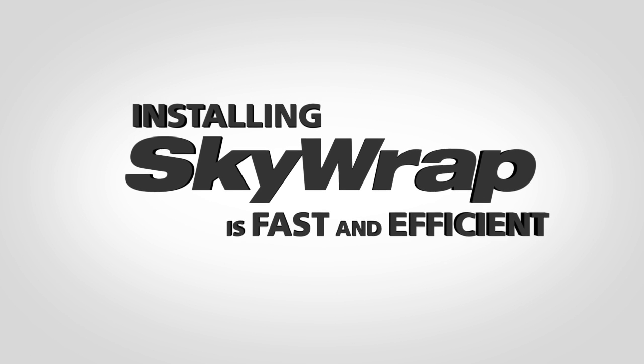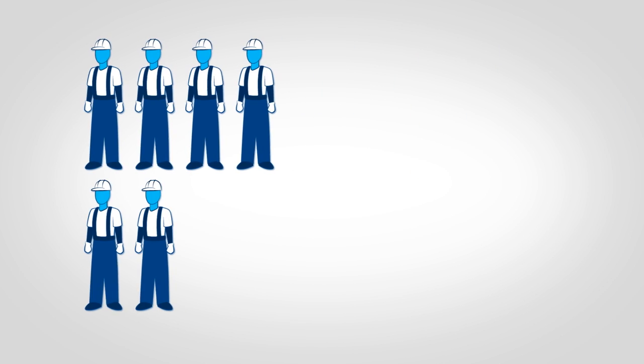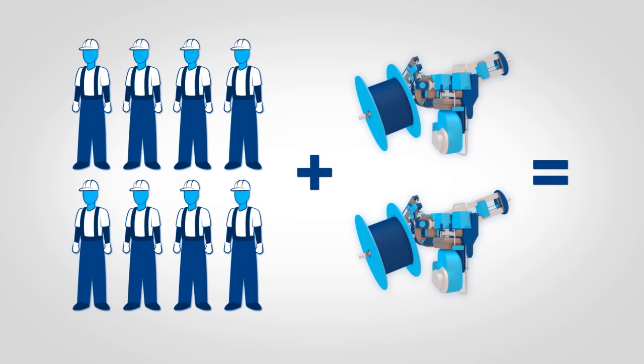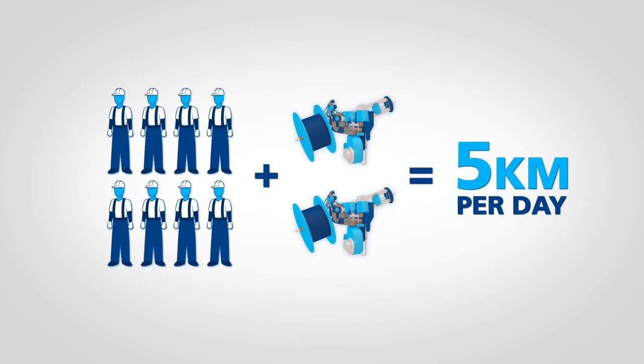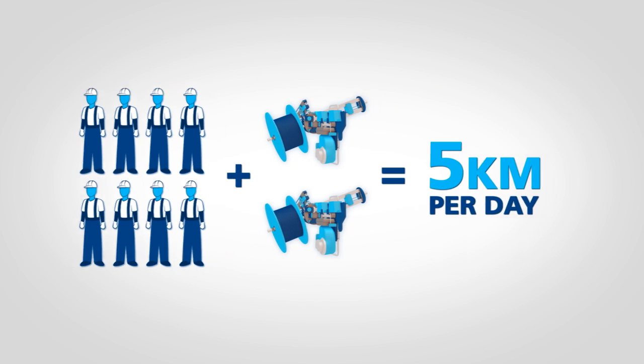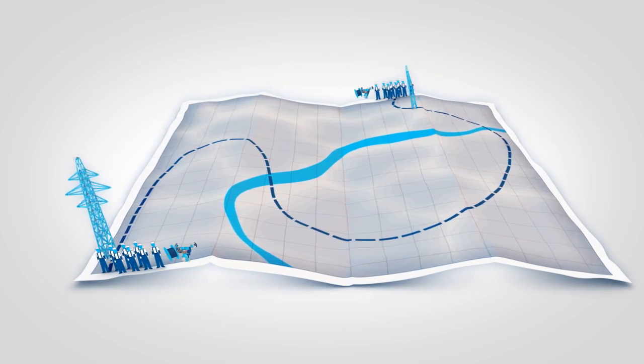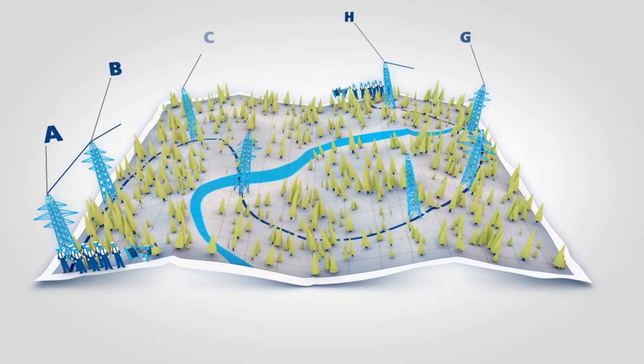Installing Skywrap is fast and efficient. Eight linesmen and a pair of wrapping machines can cover distances of up to five kilometers per day, minimizing your investment. Multiple teams can be used along the route to increase the rate of installation.